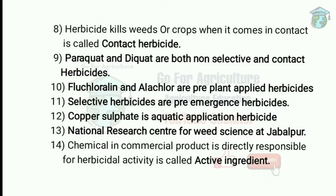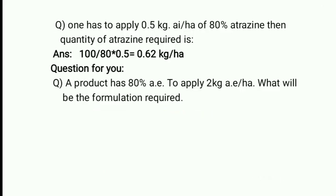The chemical in a commercial product that is directly responsible for herbicidal activity is called the active ingredient. This is very important because there are many numerical problems based on it. Active ingredient is generally expressed as percentage by weight. The formula is: quantity required = recommended dose ÷ active ingredient × 100.